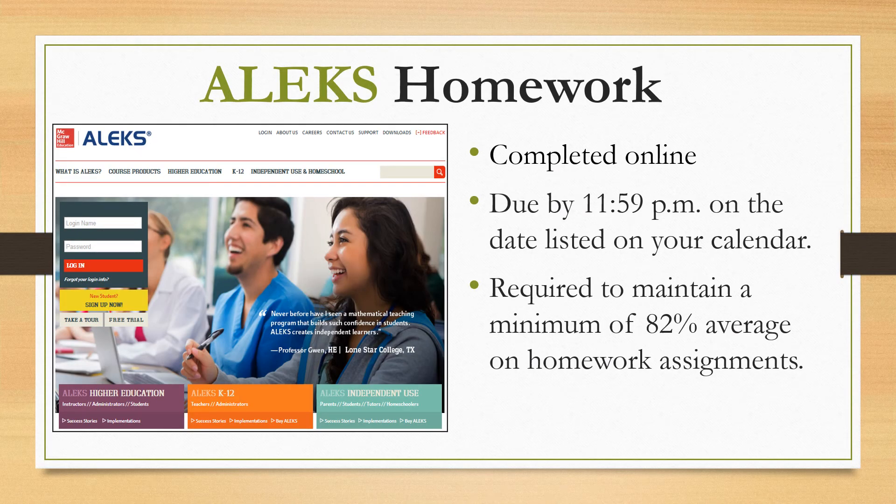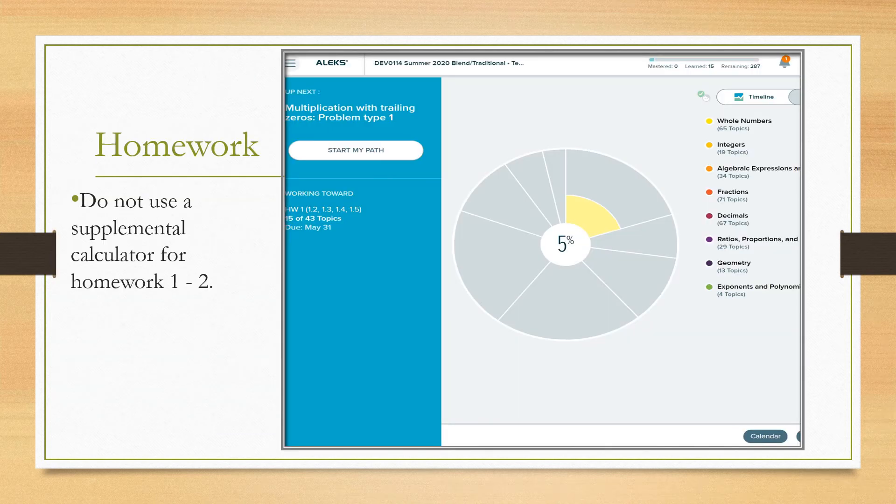You'll be completing nine Alex homework assignments this summer and they will take several hours to do each week. This is the Alex home page. You will see your weekly homework progress in the lower left. In the upper right, you'll see how many topics you've learned and how many topics remain in the course. We request that you do not use a supplemental calculator in Unit 1, which will be the first two homework assignments, as we would like you to learn how to do operations with whole numbers and integers without relying on a calculator.